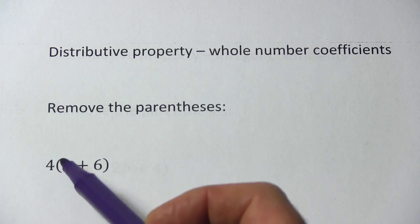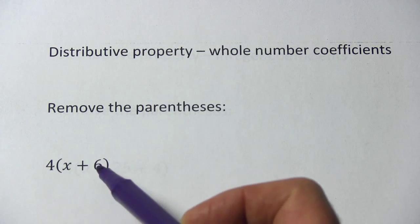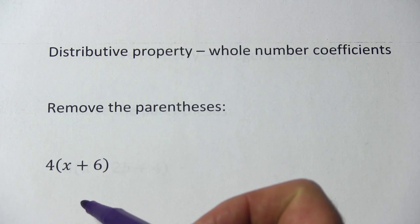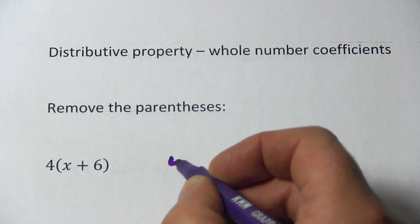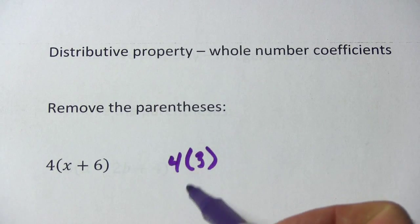You'll notice in this first one we have a 4 snugged up right against these parentheses, and then x plus 6, so two terms inside the parentheses. If you saw just a 4 snugged up right against parentheses 3, you would know that meant 4 times 3, and that would equal 12.